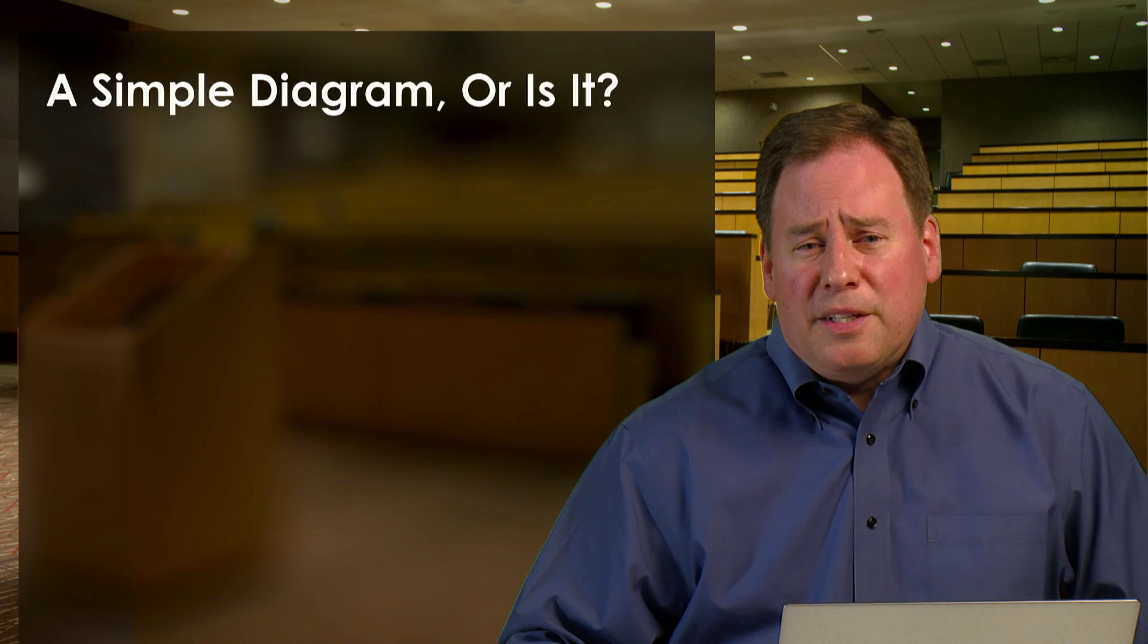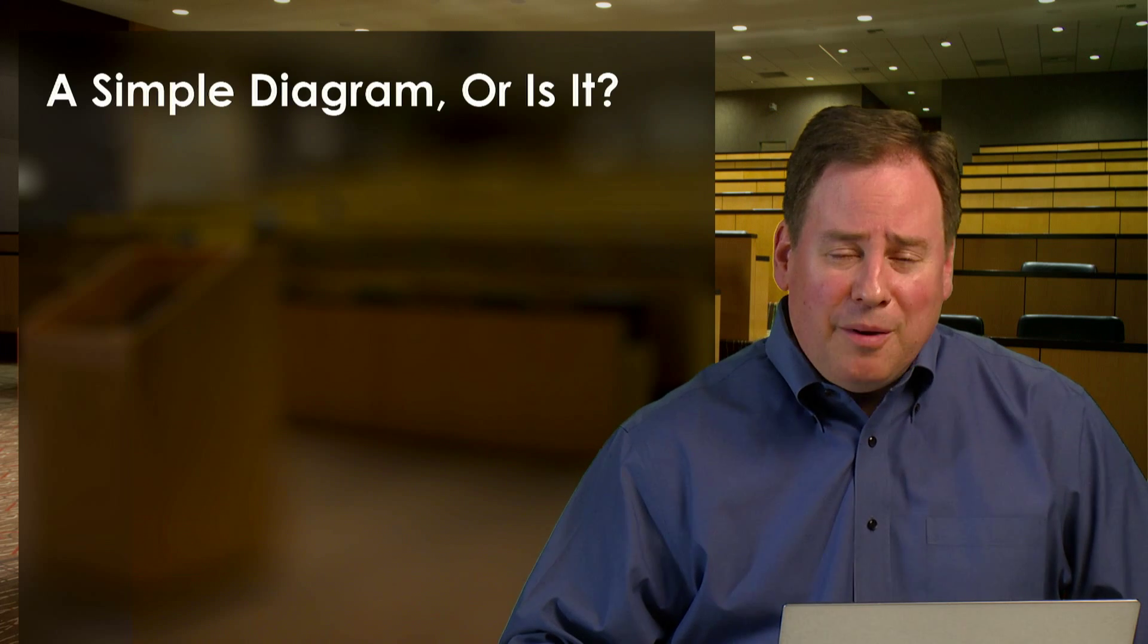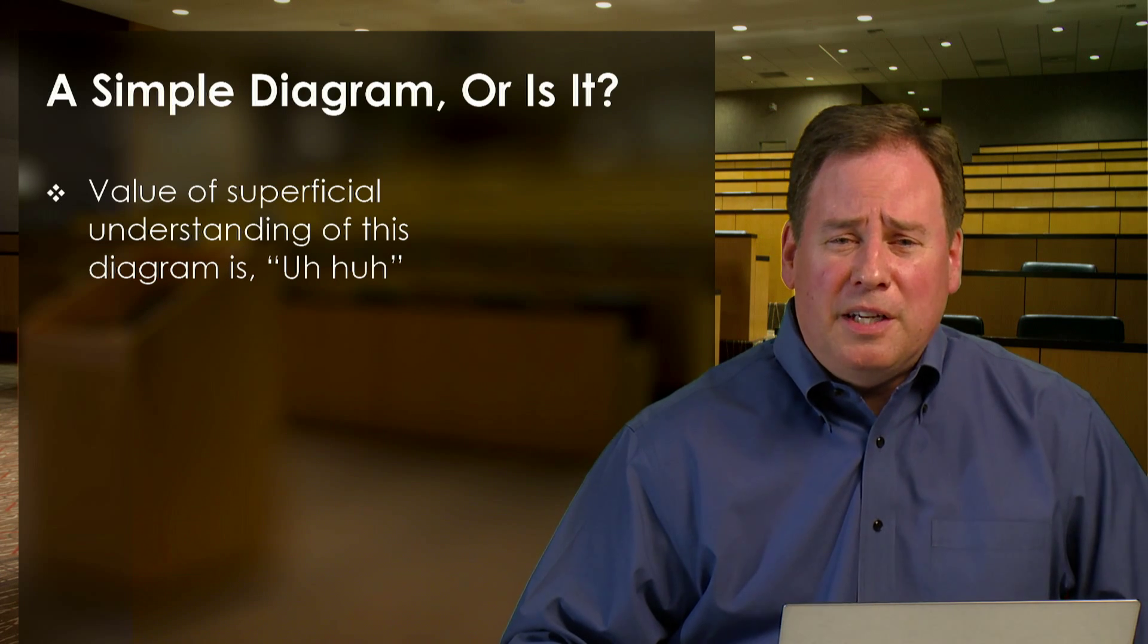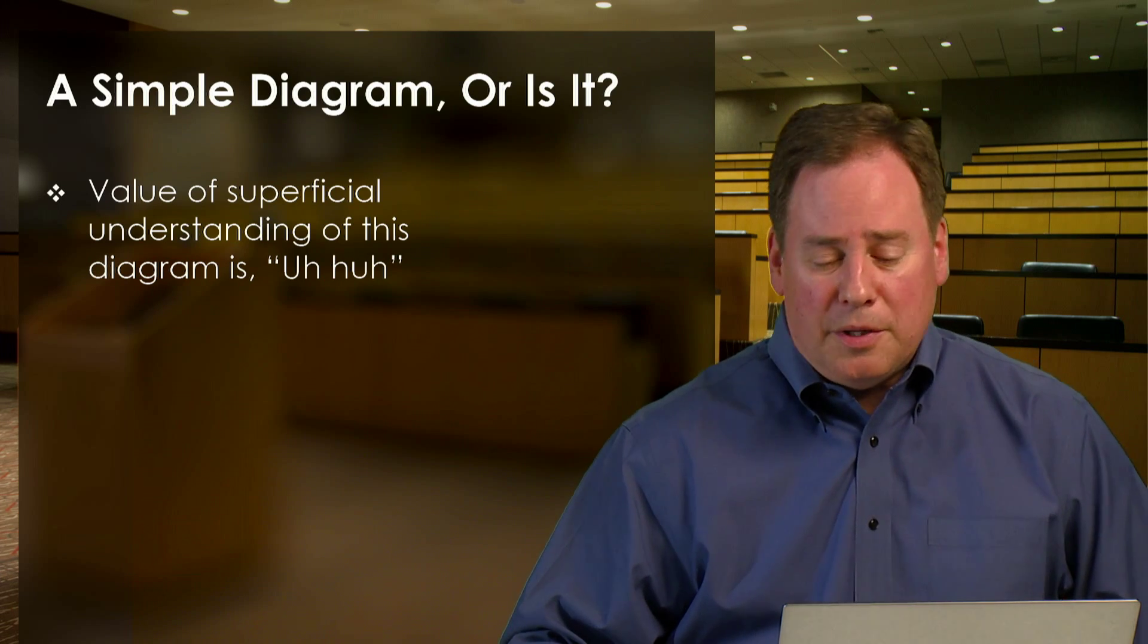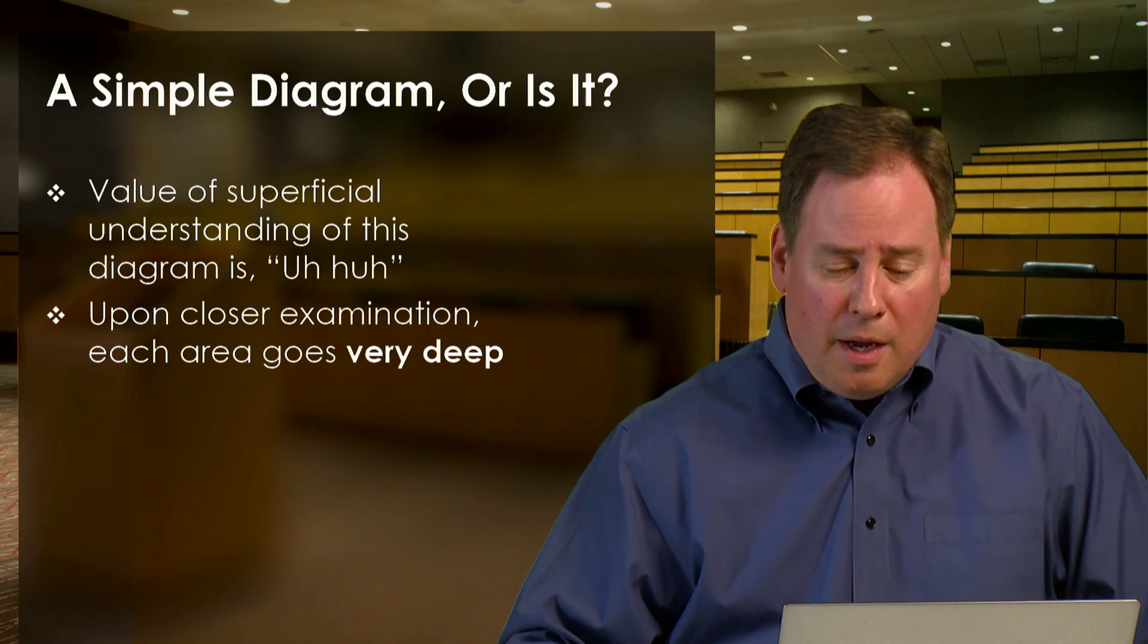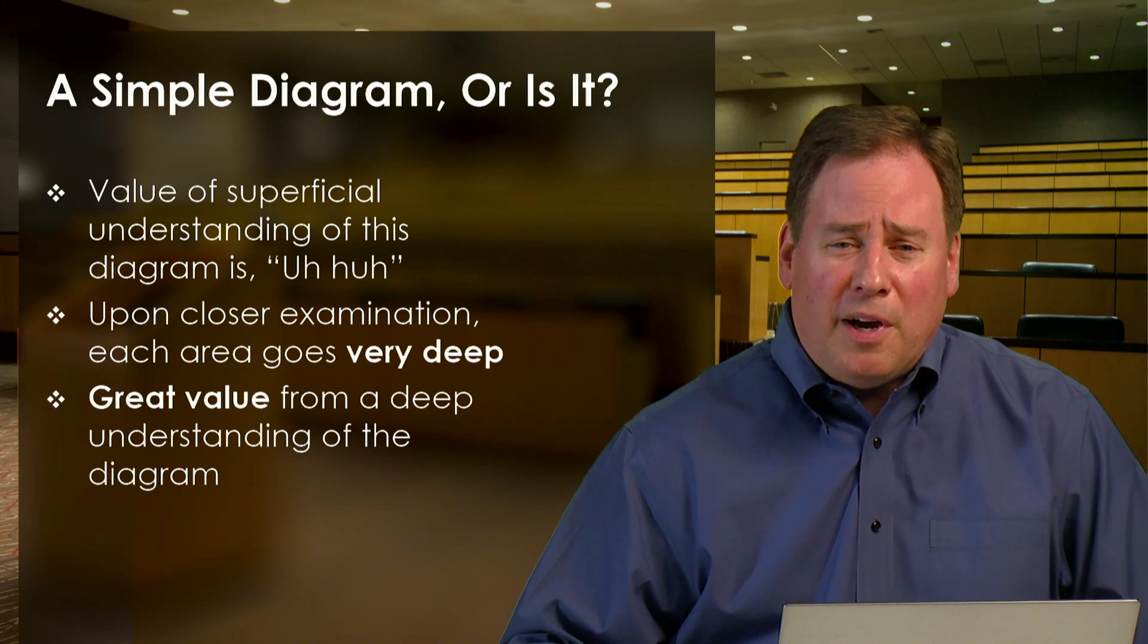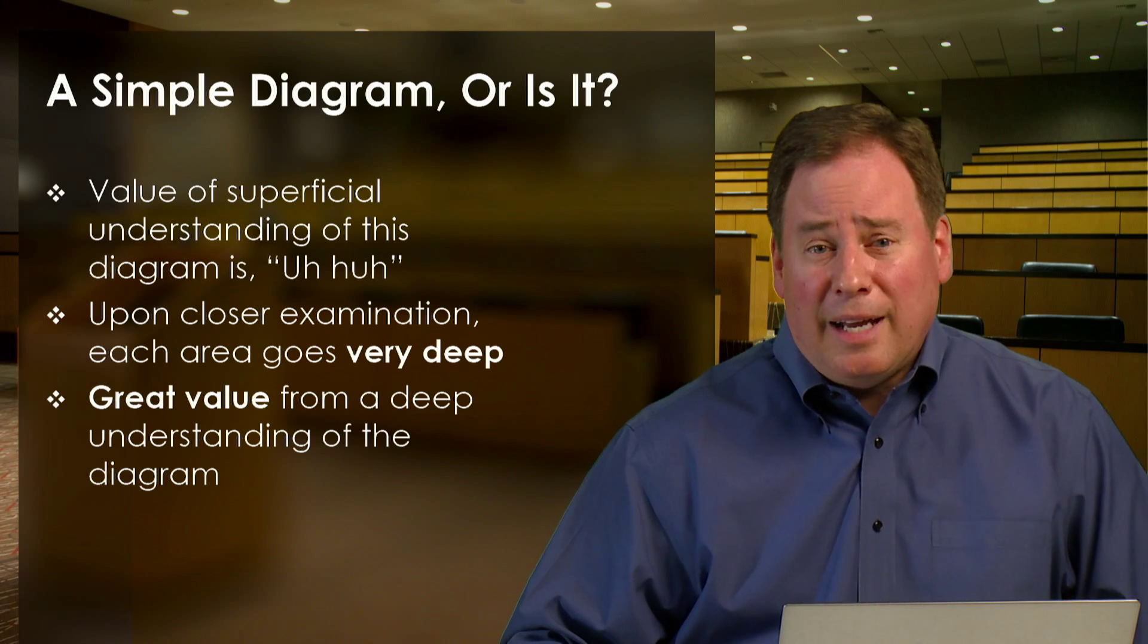So at first glance, this diagram seems kind of simple. We've got four bubbles and we've got a Lifecycle diagram in the middle, but it really isn't as simple as it appears. I think if you look at it superficially, and just look at the four bubbles and say, yeah, I kind of understand what is in each of those four bubbles, that's going to be a pretty minimal takeaway from this lecture series. But what we find is that if you closely examine each area, each of these areas goes very deep. And if we have a really deep understanding of each of the areas and of the interactions, then we can get great value in terms of improving our software project outcomes, making our lives as software developers more successful, and actually a little bit easier.